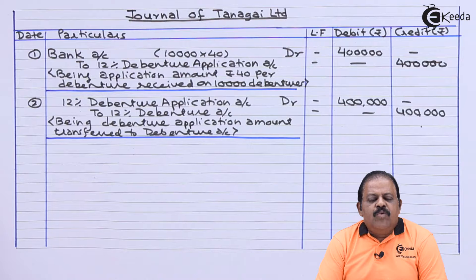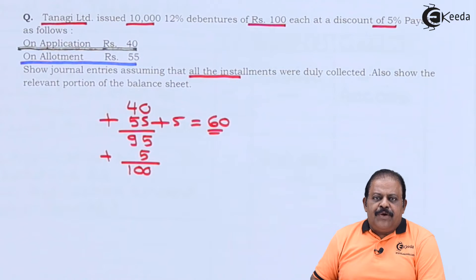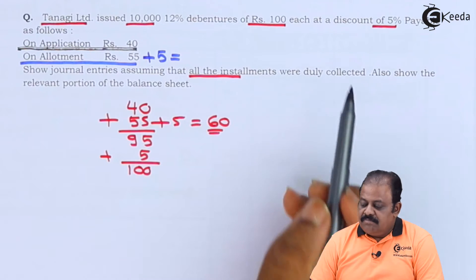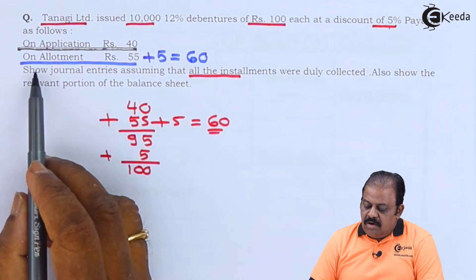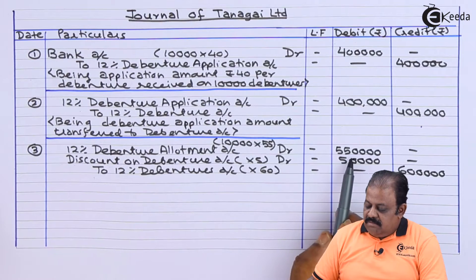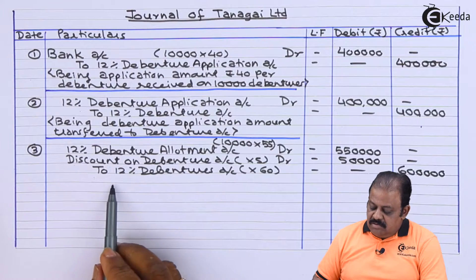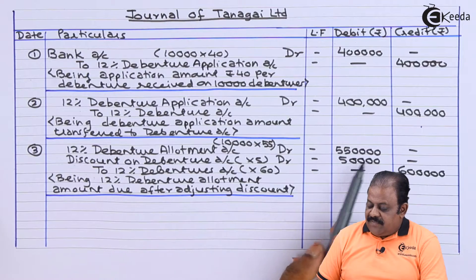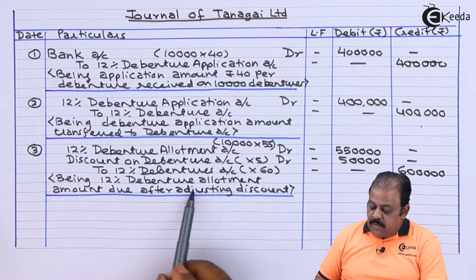Let us now move to the debenture allotment stage. On allotment, rupees 55 are due, plus we are required to adjust discount of 5 rupees — that is 5% on nominal value of 100 — so total amount on allotment will be 60 rupees. 12% debenture allotment account debit 5 lakhs 50,000; discount on debenture account debit 50,000; to 12% debenture account 6 lakhs, being 12% debenture allotment amount due after adjusting discount.